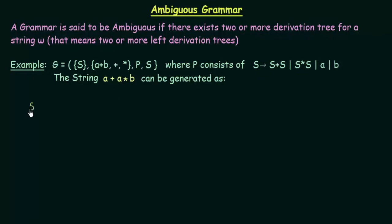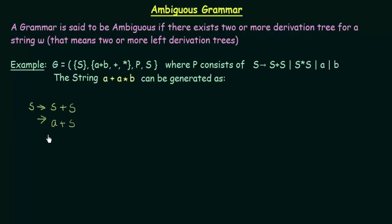Starting with the start symbol S, I will use the production S → S plus S. Since this is a left derivation tree, we start from the leftmost symbol S. I will replace this S with A (using the production S → A), giving us A plus S. Now I need to get A*B from the remaining S.